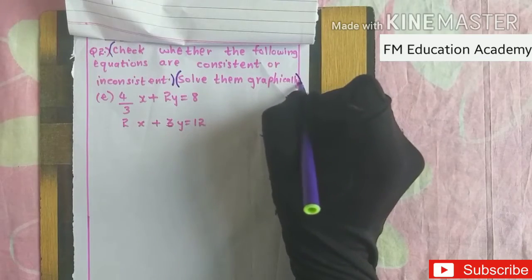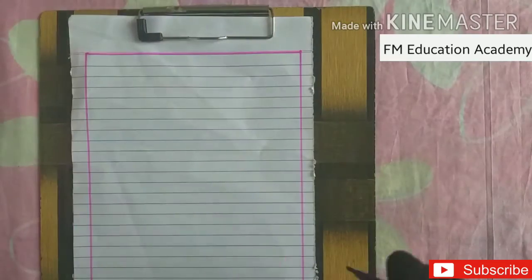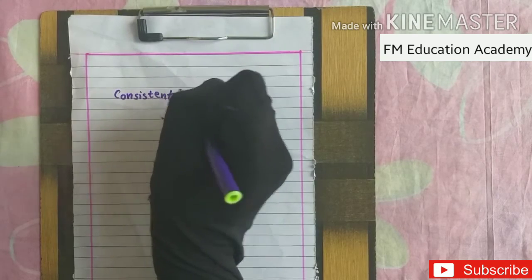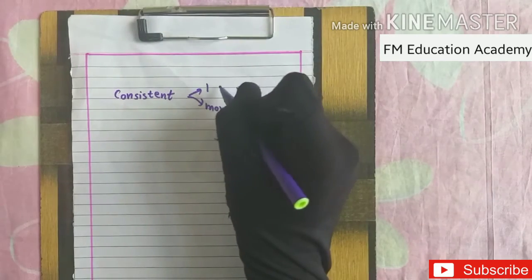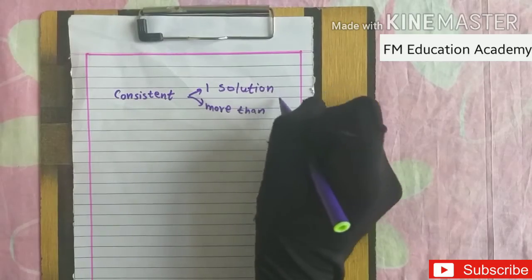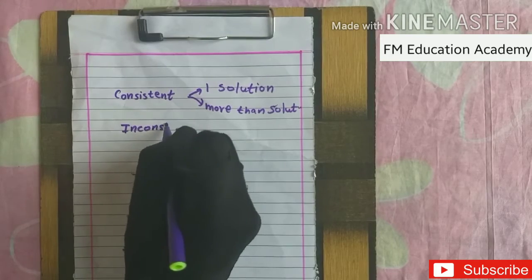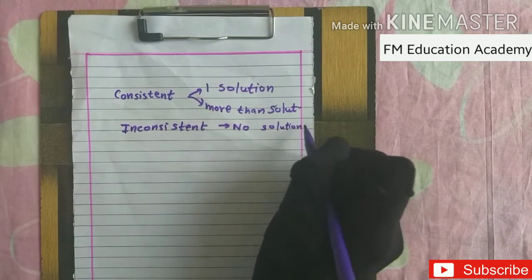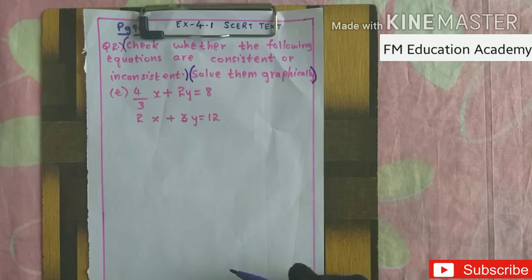There are two parts to this question: first, determine whether the equations are consistent or inconsistent; second, solve them graphically. Two equations are called consistent when they have one or more solutions. They are called inconsistent when they have no solution — that is, when the lines do not meet on the graph.